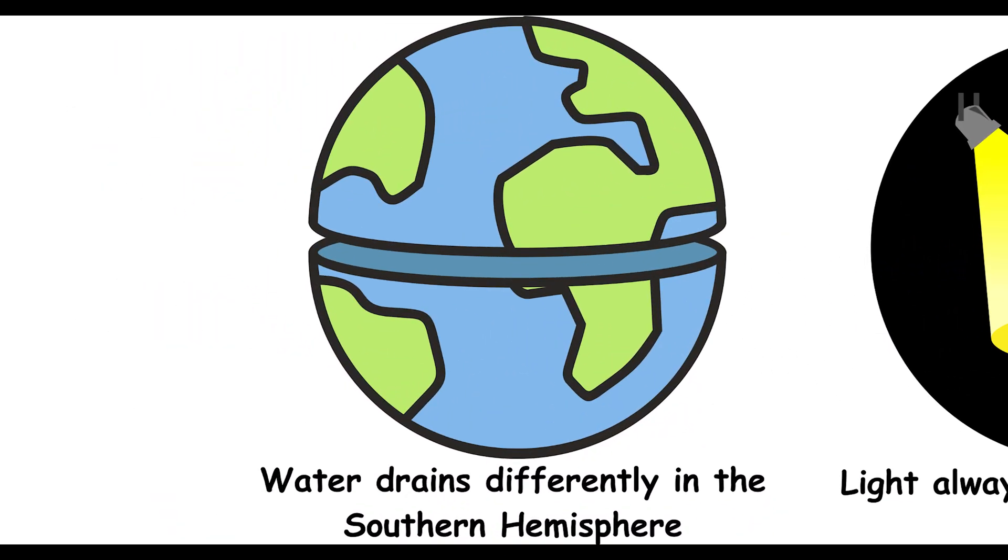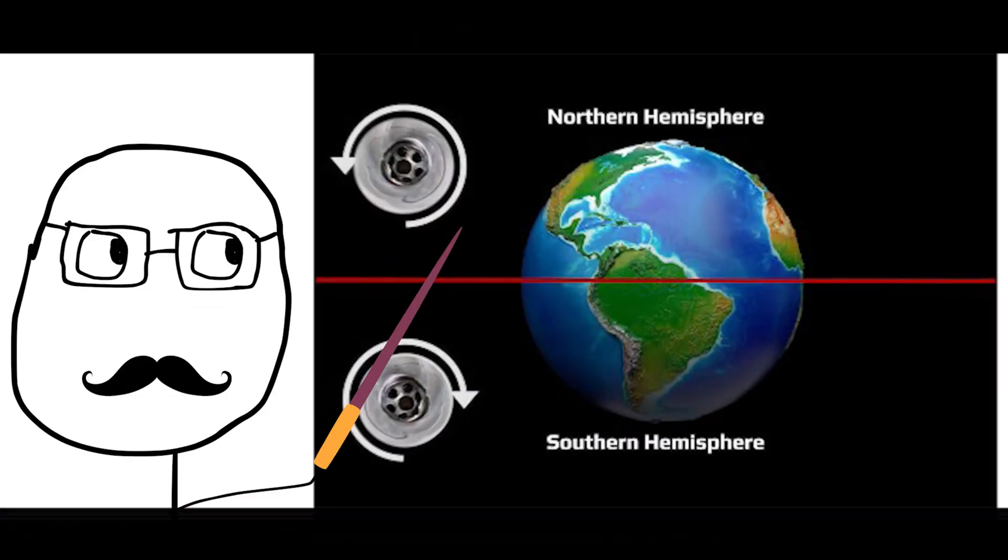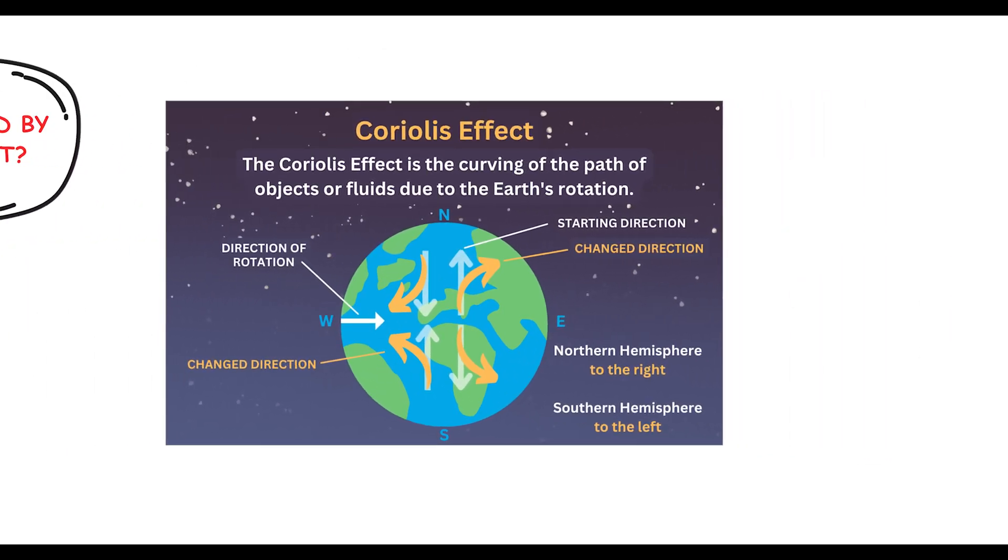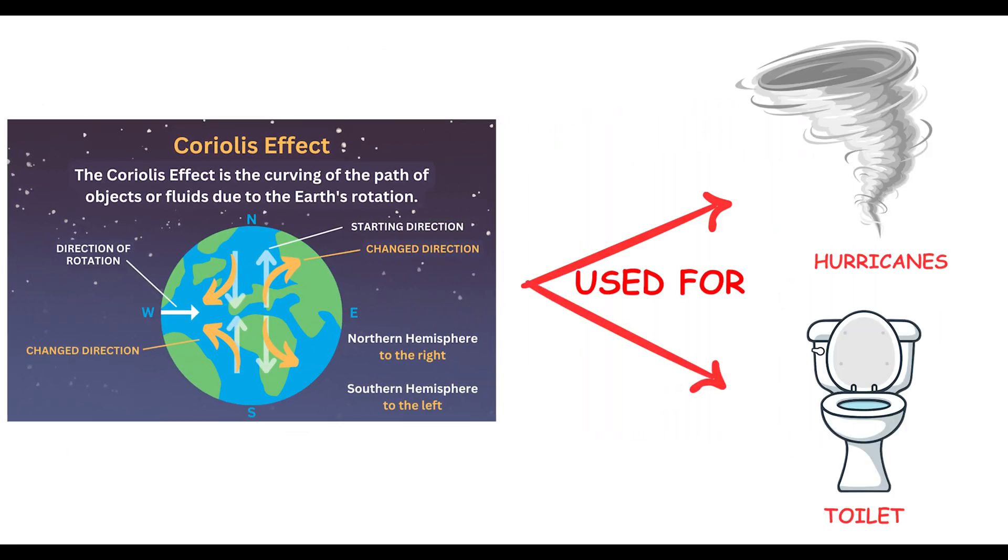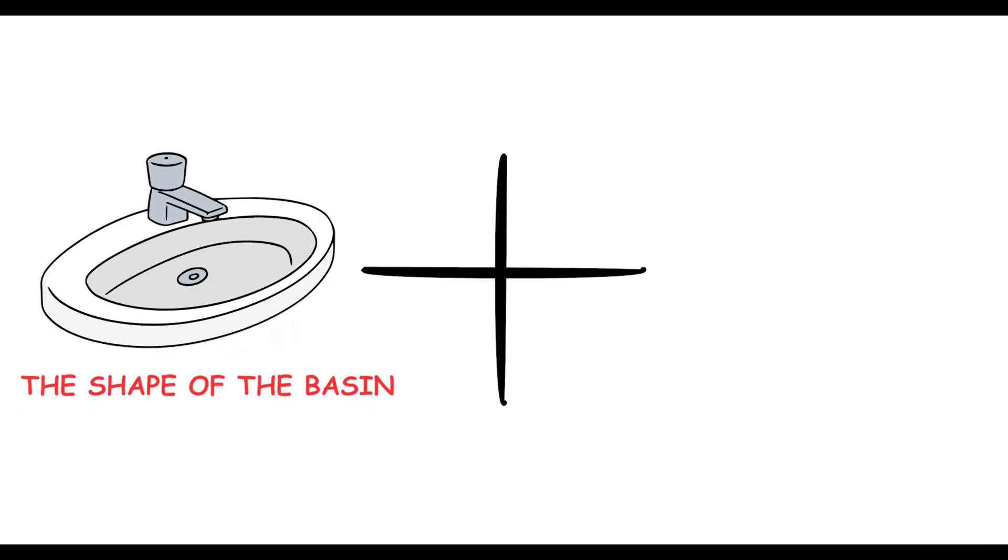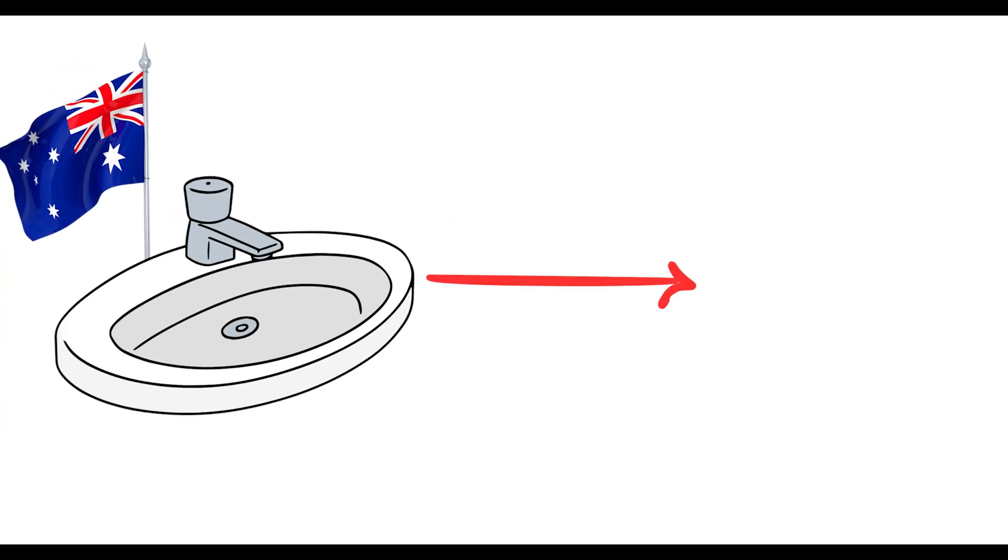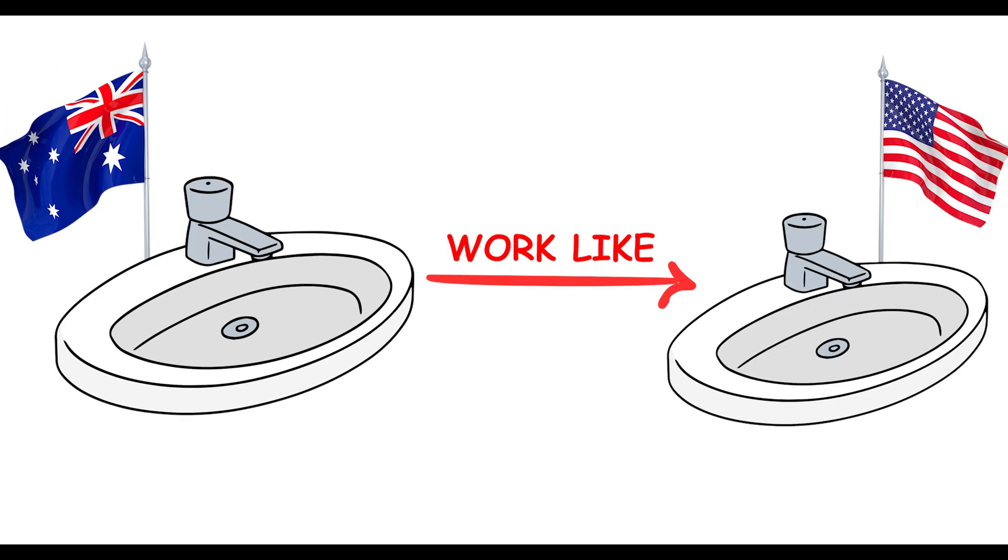Water drains differently in the Southern Hemisphere. Ever heard that water drains differently in the Southern Hemisphere? It's a myth. The Coriolis effect, which is often blamed, affects large-scale phenomena like hurricanes, not small things like toilets. The shape of the basin and direction of the water flow determine the draining direction. So, your sink in Australia works just like it does in the US.